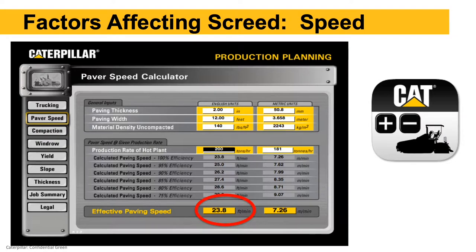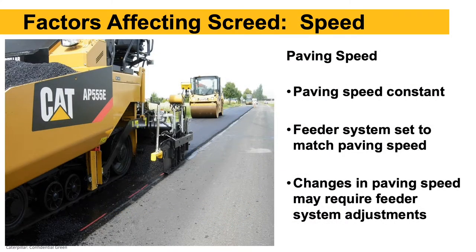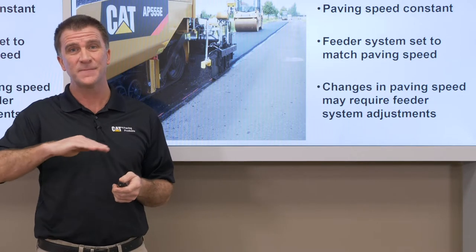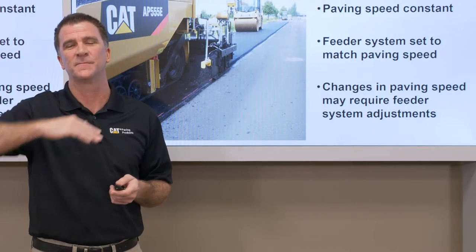Speed really goes to the planning part of it. You can calculate a paver speed by taking your total tonnage for the day, paving width, and paving thickness — that will ideally get rid of the amount of mix you're planning on delivering to the job that shift at a constant paving speed. Once you have that paving speed, the feeder system — conveyors and augers — will be set to match it. If we do change paving speed during the day, we need to think about changing the feed system to maintain the same head of material.